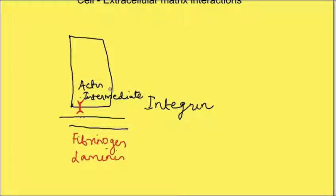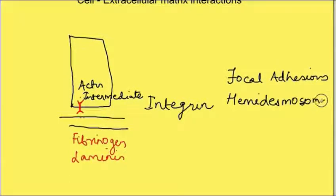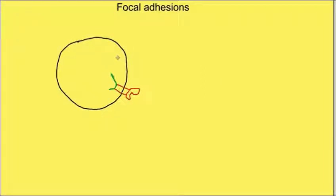So we will discuss two types of cell extracellular matrix interaction: focal adhesions and hemidesmosomes. Focal adhesions are transient, pliable cell-matrix interactions. In focal adhesions the intracellular binding domain of integrin binds with actin filaments.